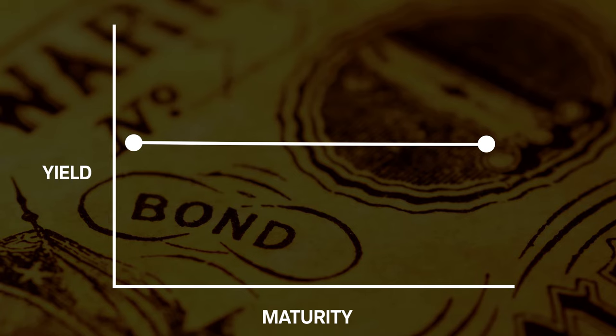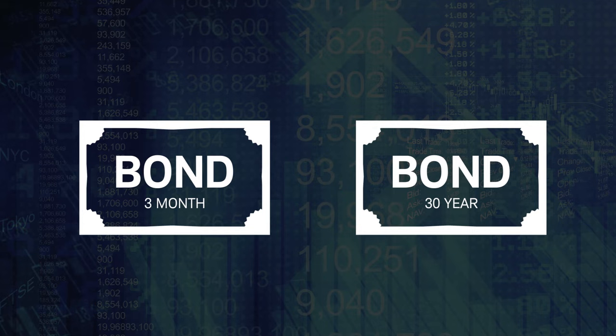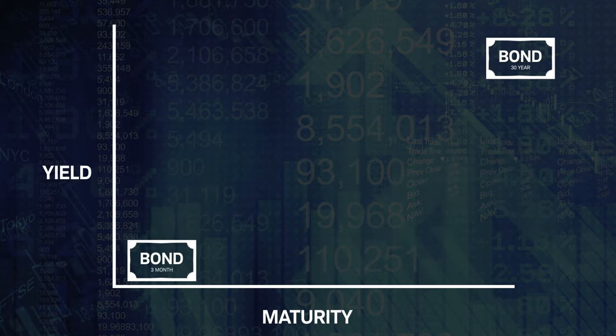A flat yield curve results when yields for short and long-term maturities are roughly equal. The yield curve is normally in a positive slope because shorter maturities typically yield less than longer maturities. When the yield curve is in a positive slope,